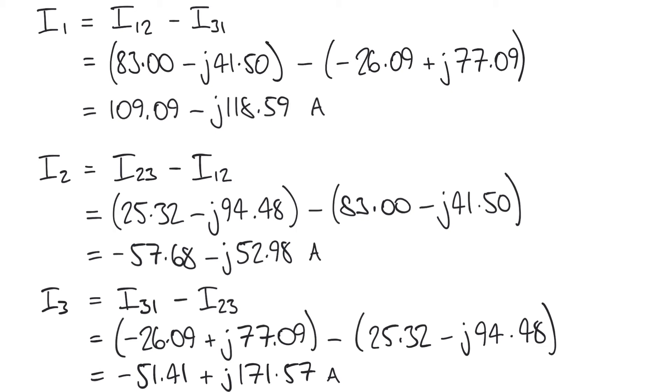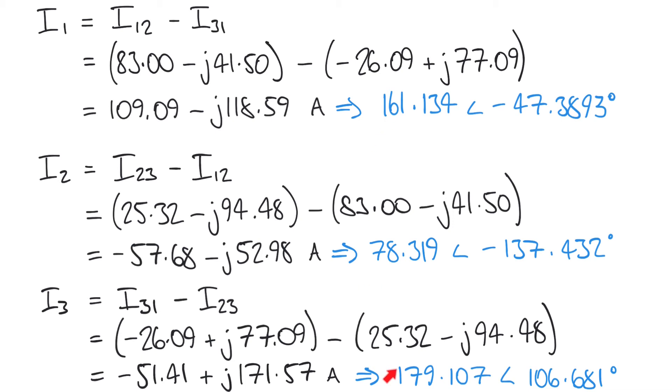If we want, we can convert these line currents back into polar form, and we're going to do this because we're going to use these values to plot on a phasor diagram. So when we convert these three line currents that we found back into polar form, again you can just use the pol function on a calculator, but we get these values here.